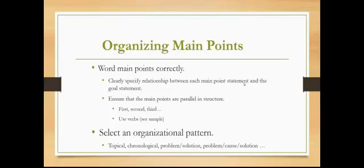Chronological is harder for a persuasive speech, but doable — something like 'becoming a better voter' could work. Then there's problem-solution: main point one might be your history, main point two is the problem — why people view pit bulls negatively — and main point three is the solution: how do we fix it? Problem-cause-solution just adds an extra main point for the cause.